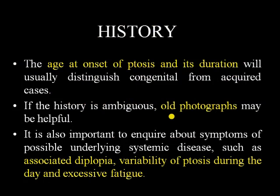How do you evaluate a patient? First of all, take a history. The age of onset and duration of ptosis will usually distinguish congenital from acquired ptosis. If the history is ambiguous, ask the patient for old photographs, which may show any change in severity over time.